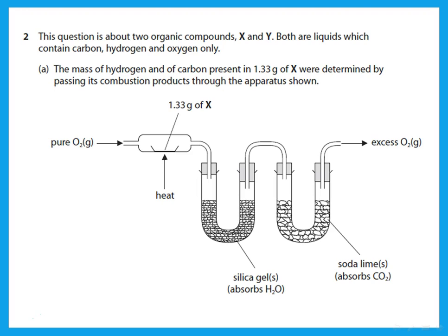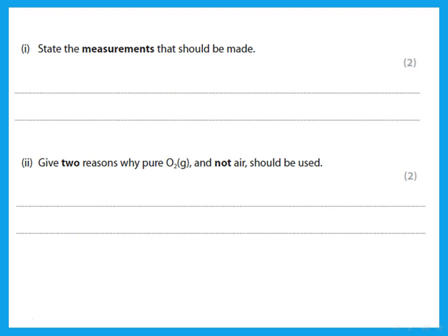This question is about two organic compounds X and Y, both liquids containing carbon, hydrogen, and oxygen only. The mass of hydrogen and carbon in 1.33 g of X were determined by passing combustion products through apparatus: pure oxygen passes over X, and the combustion products — CO₂ and water vapor — are absorbed. Water vapor is absorbed by silica gel and carbon dioxide is absorbed by soda lime. The measurements needed are the initial and final mass of each tube and its contents.